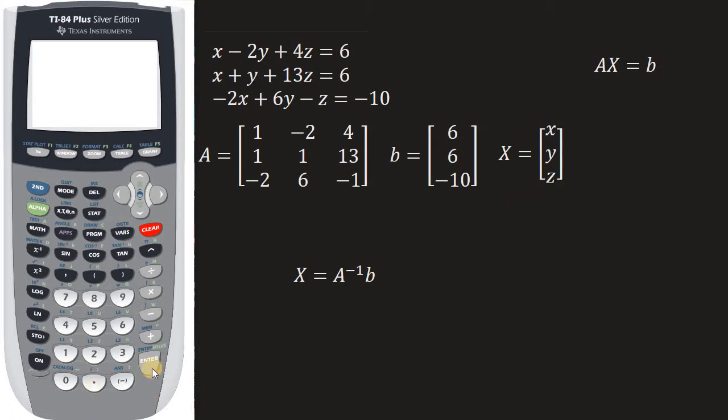Alright, so the way that we have to do this is we have to multiply this through by the inverse of A. So if we multiply this side and this side right here by A inverse, then that's going to leave us with this,